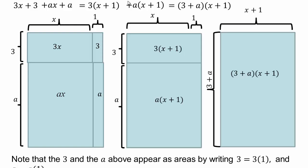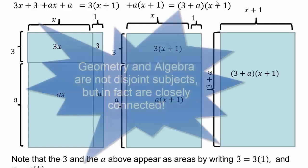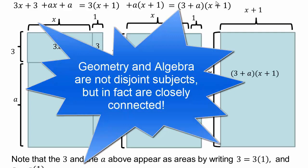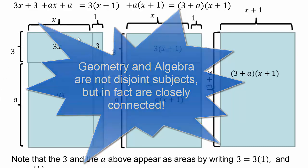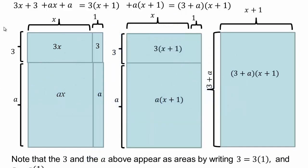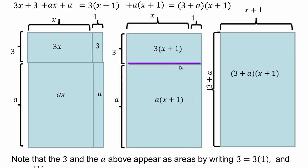Factor by grouping is also the same as adding like terms or factoring out the greatest common factor. You can see how those algebraic principles can be looked upon as geometry. Geometry is not a separate entity — it can aid understanding of algebraic concepts. So 3x plus 3 and ax plus a are the four pieces; taking away divisions gave us 3 times x plus 1 and a times x plus 1, then 3 plus a times x plus 1 as the area of this rectangle.